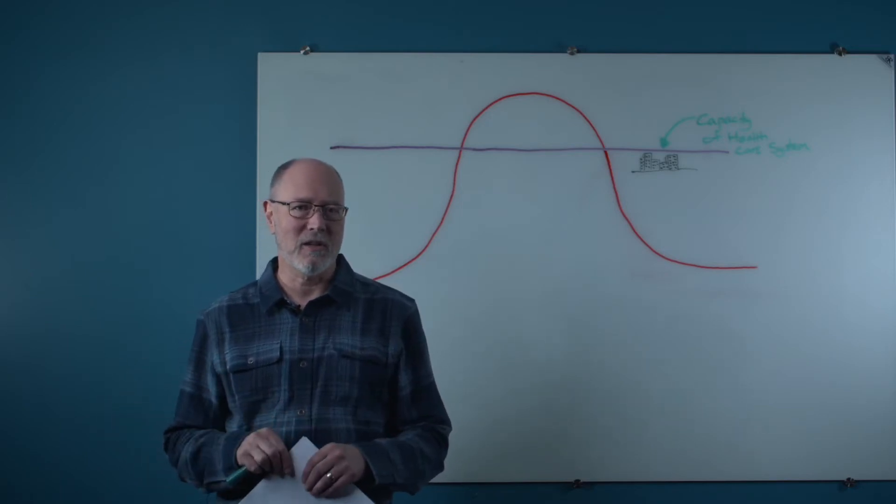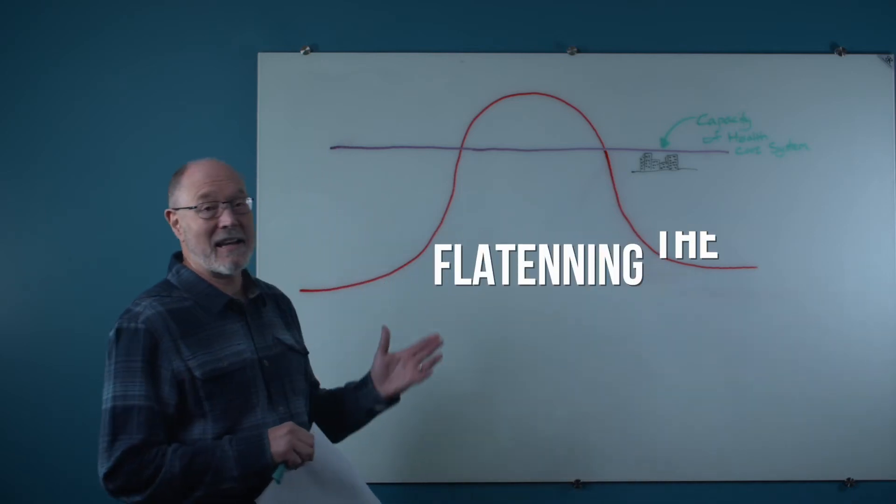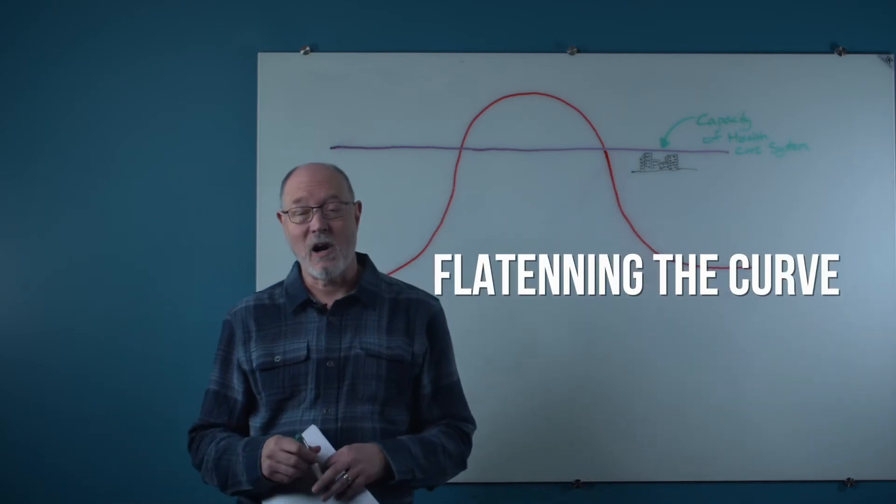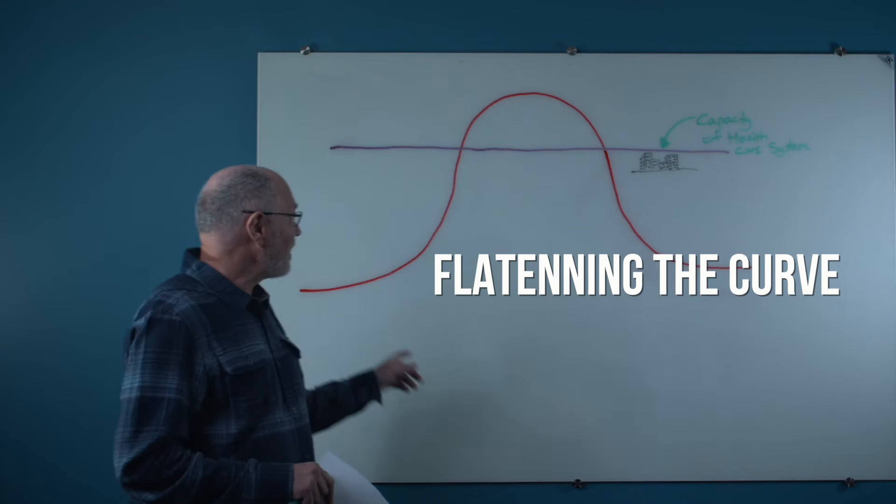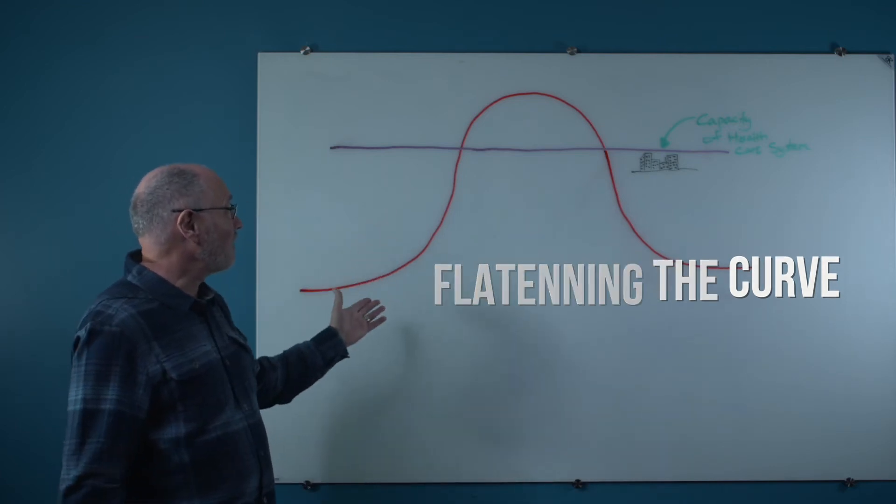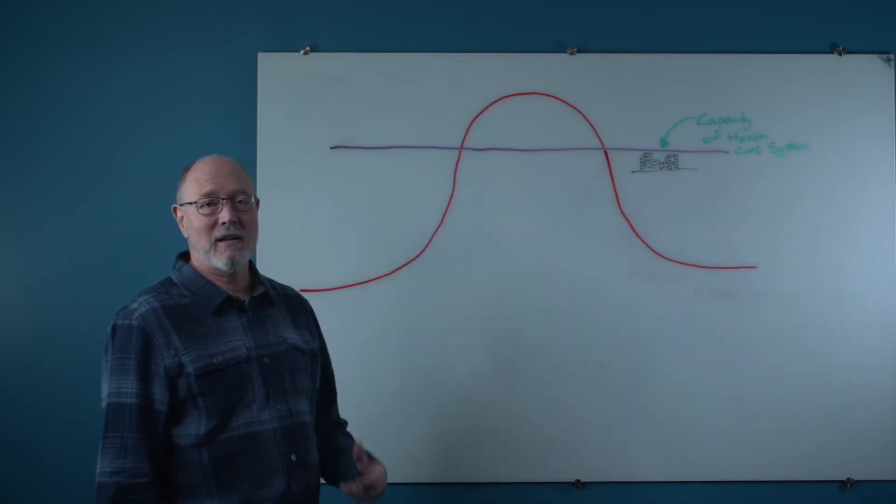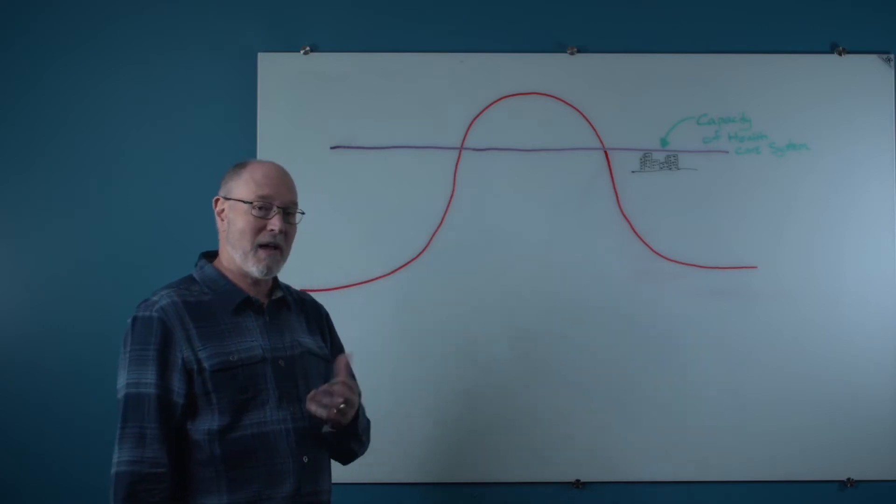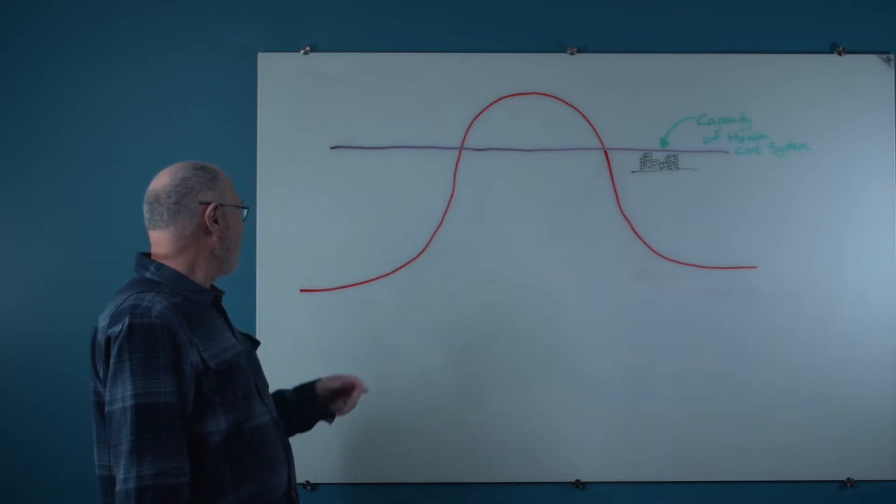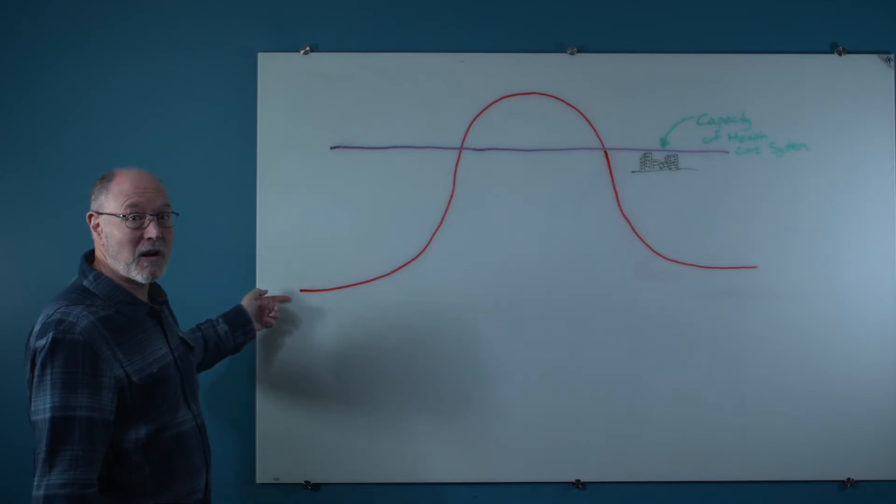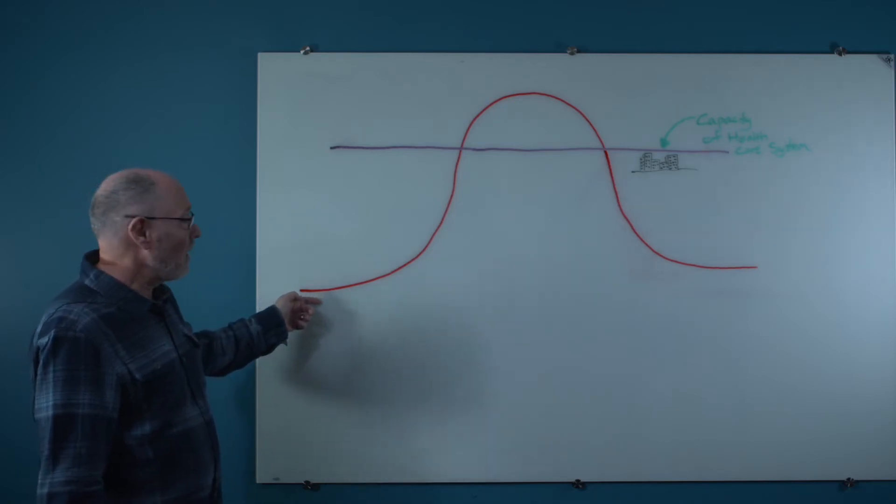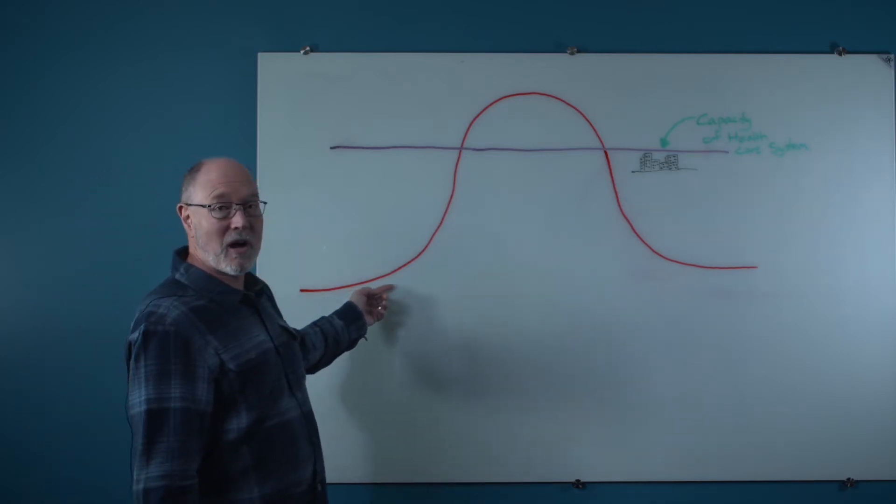And I want to explain this to you. It's a thing called flattening the curve is what we're really trying to do. If you see in the red, this would be like the virus, the number of people who become sick.